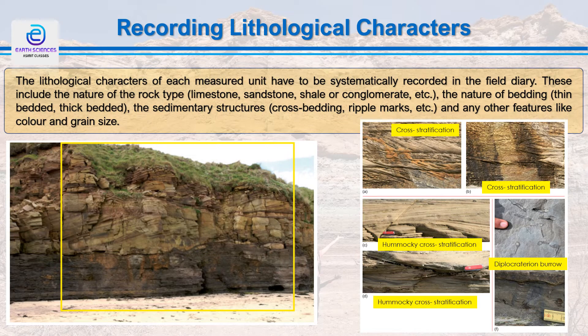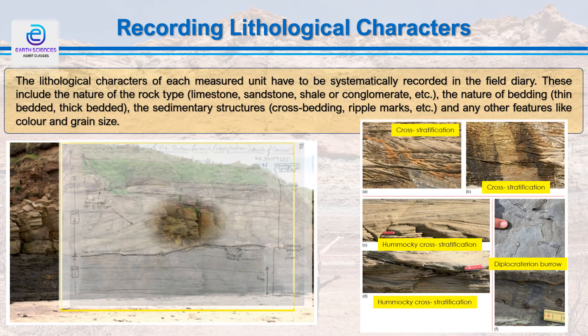We also have to record the lithological characters in order to make lithocolumns along with the thicknesses. Lithological characters of each measured unit must be systematically recorded in the field diary. This includes the nature of the rock types — for example, limestone, sandstone, shale, conglomerate — the nature of the bedding, for example if the beds are thinly bedded, the nature of sedimentary structures such as cross bedding and ripple marks, and other features like color and grain size. That is how we mark different lithological characters.